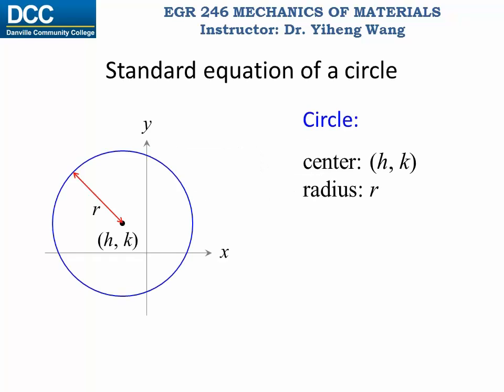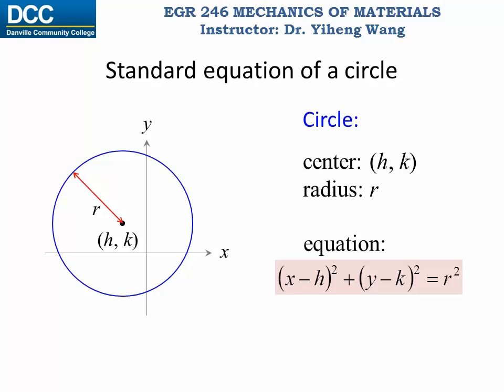Before that, let's first review the standard equation of a circle that we learned from pre-calculus. In a given x-y coordinate system, if there's a circle with the center coordinates h and k and radius of r, then the equation of this circle is given in standard form as x minus h squared plus y minus k squared equals to r squared.